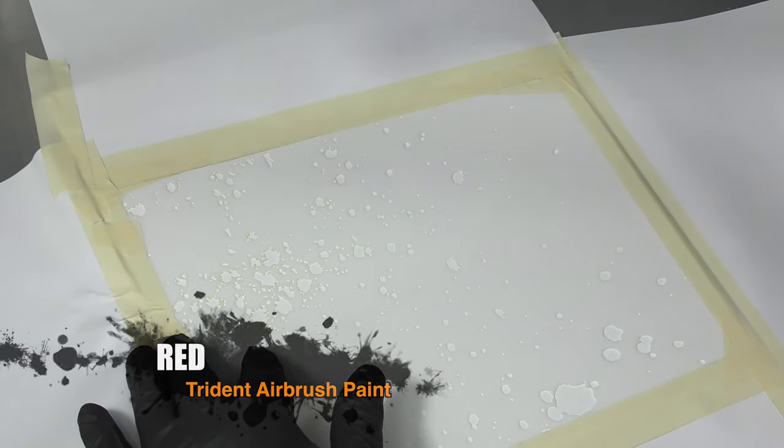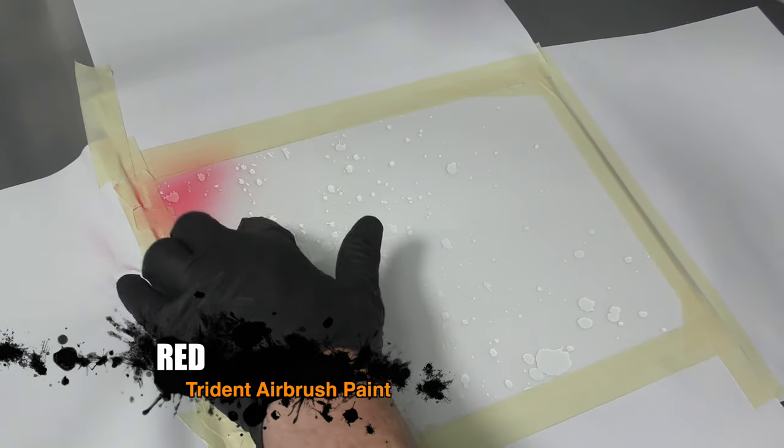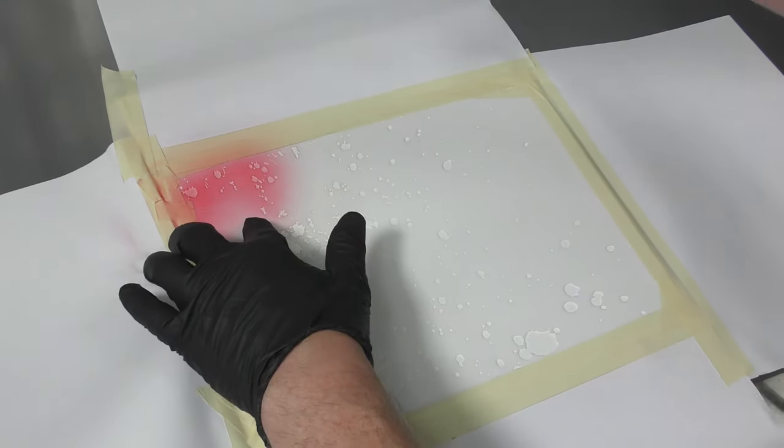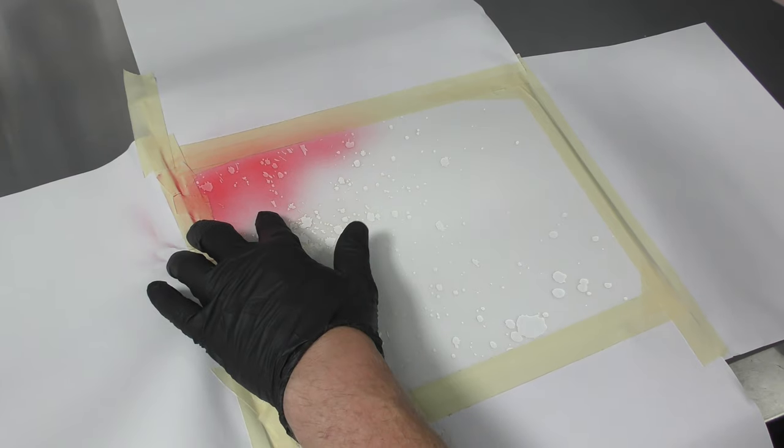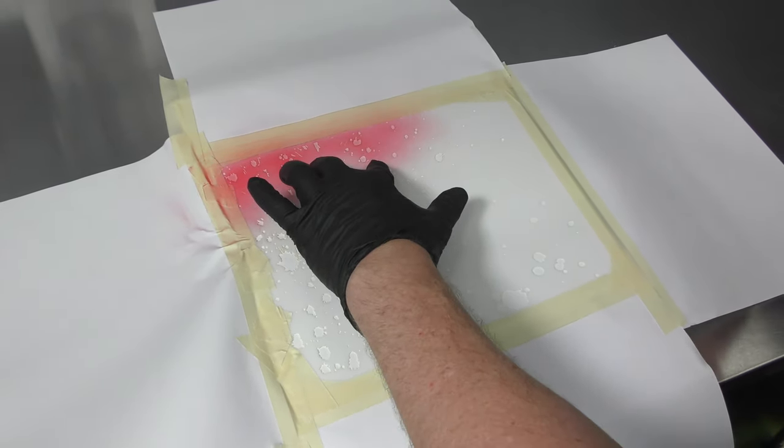So now what I want to do is get a flat tone of red on there and because I'm angling down I should be able to at least control some of that overspray. Just keep moving my fingers. It's going to take a few coats.